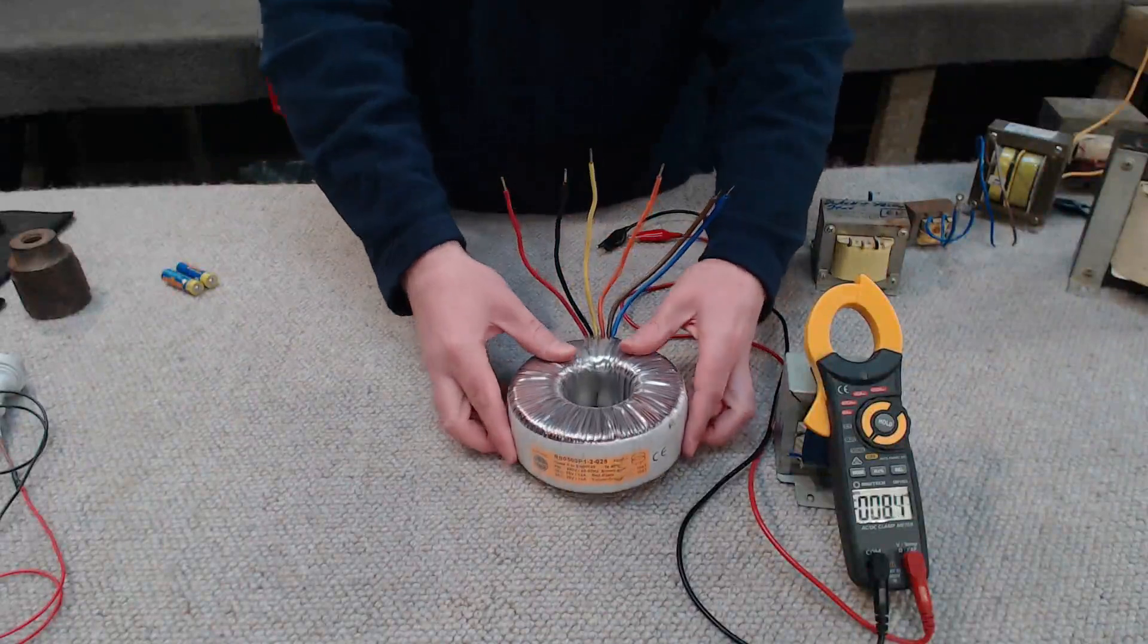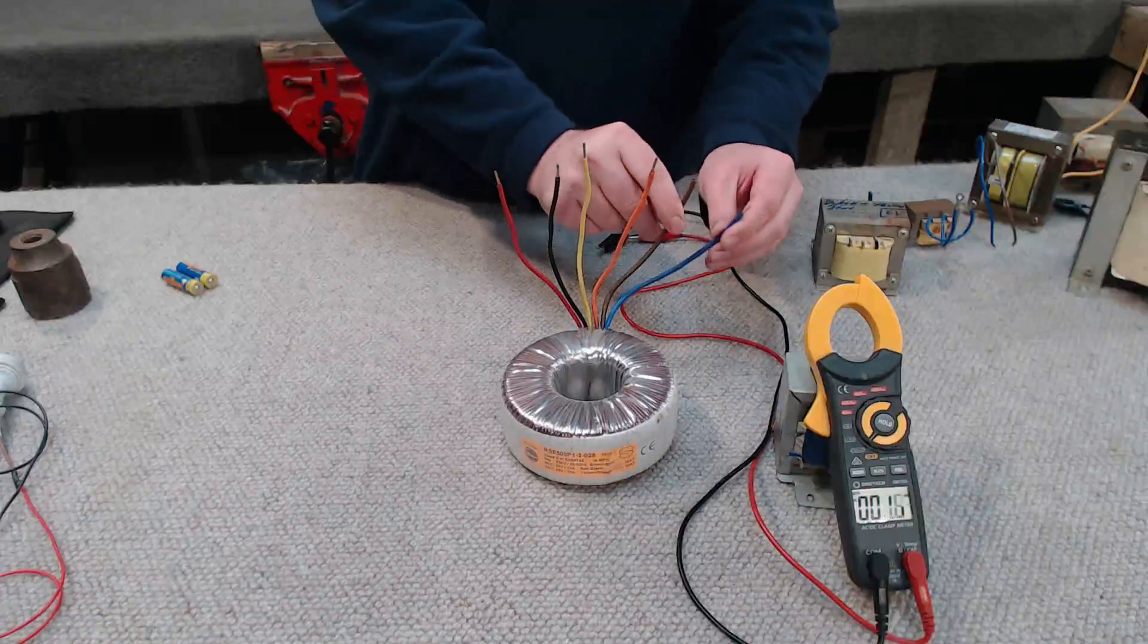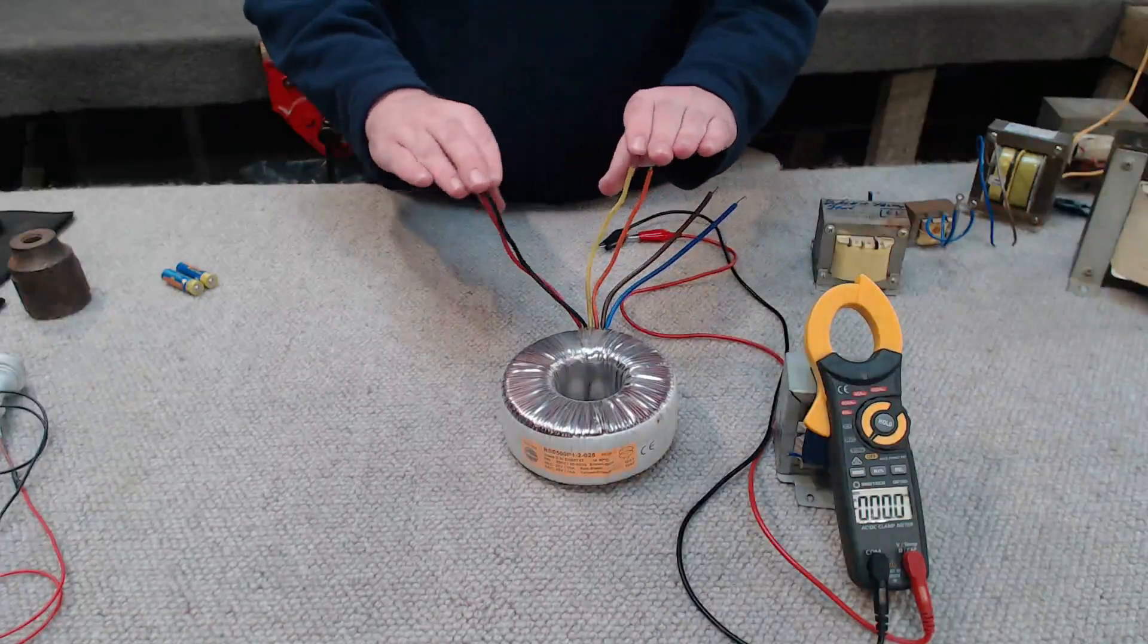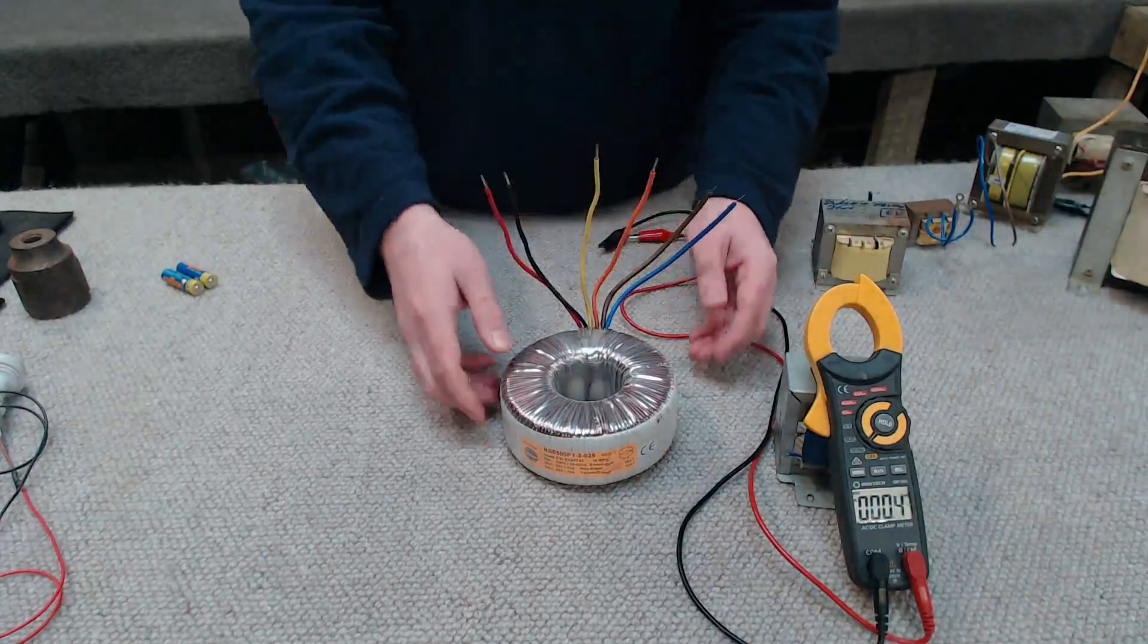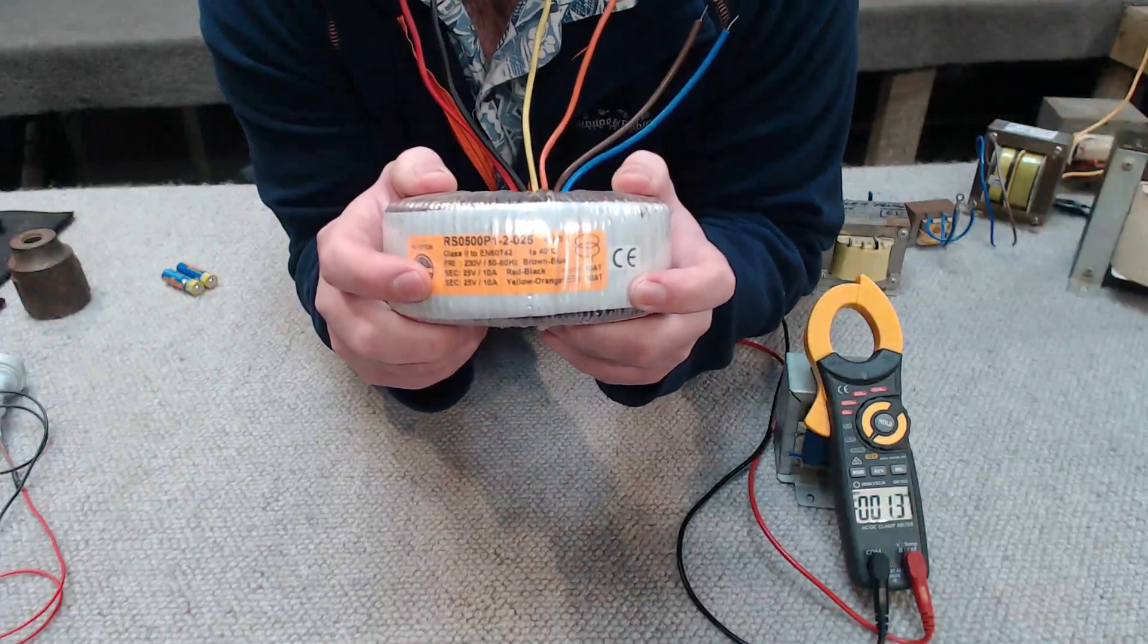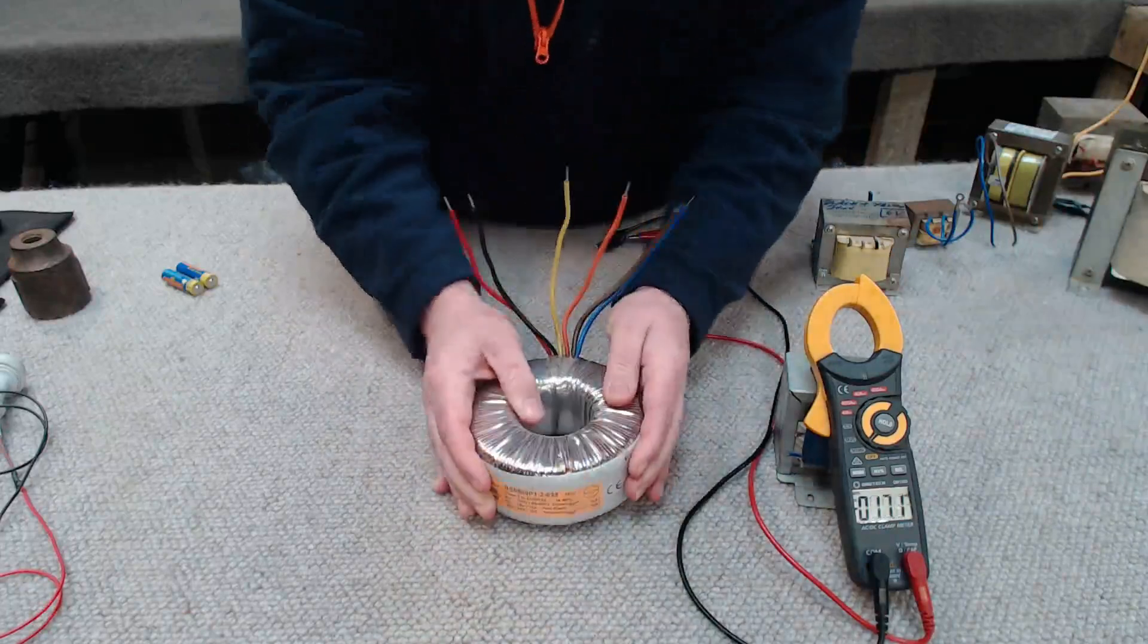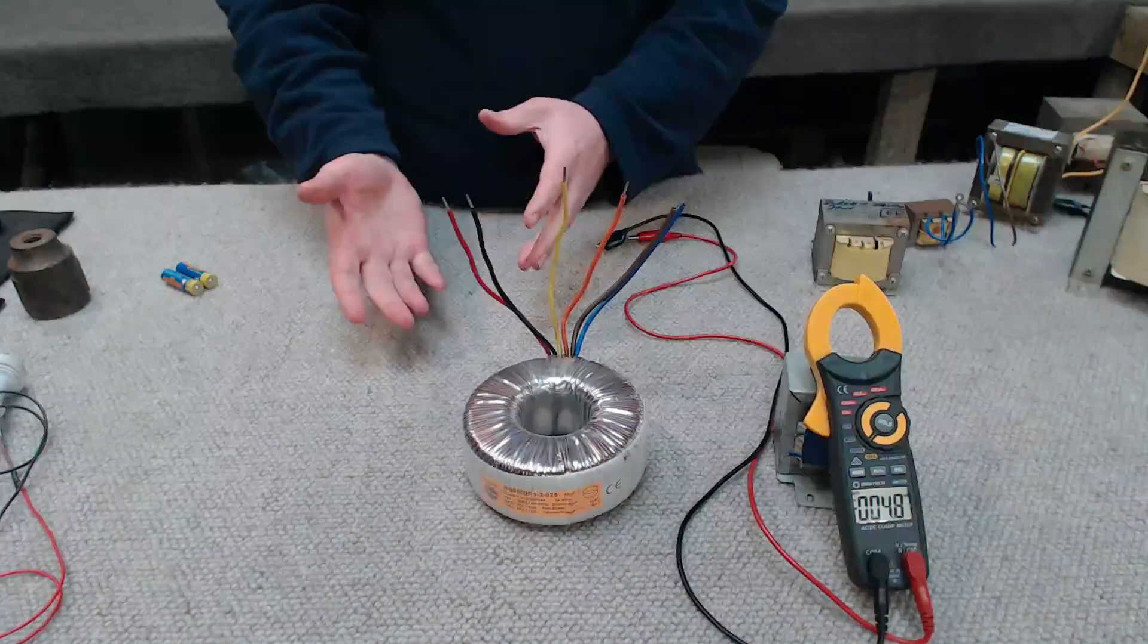So let's have a look at this toroidal transformer I purchased for an up and coming project. So over here we have brown and blue wires. This represents live and neutral. This is our primary winding. And then we have four wires over here. And this transformer has two secondary windings. If we have a look at the manufacturer's label here, we can see that each secondary over here is rated for 25 volts and outputs 10 amps of current each. So there is a couple of ways we can configure this transformer to either increase the voltage or the current.